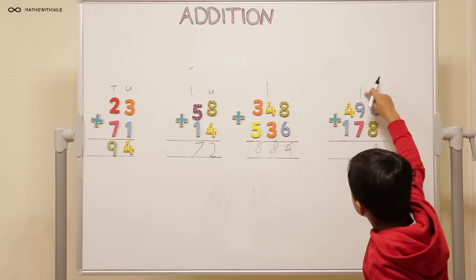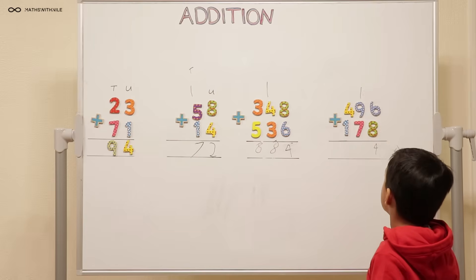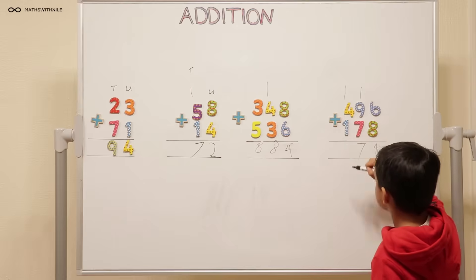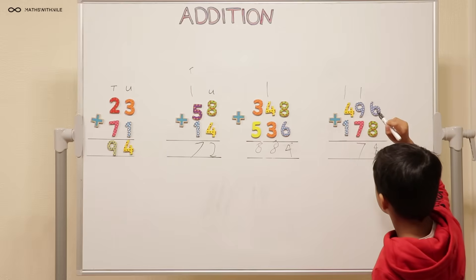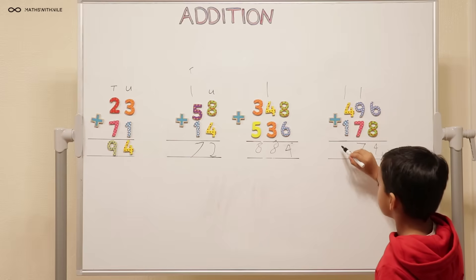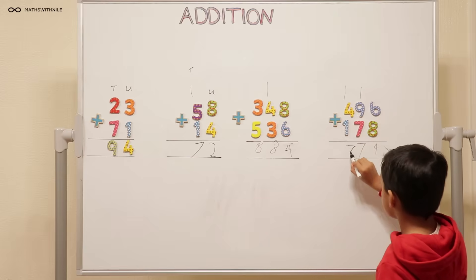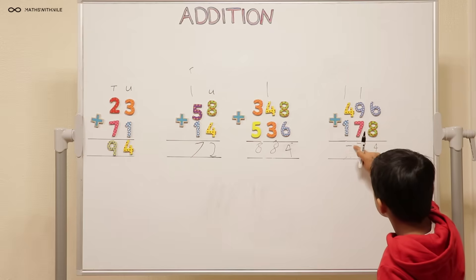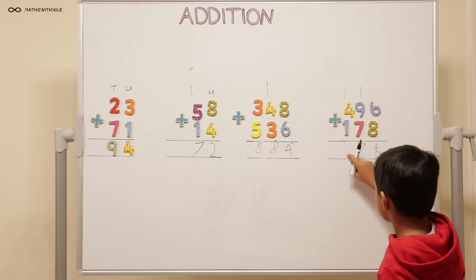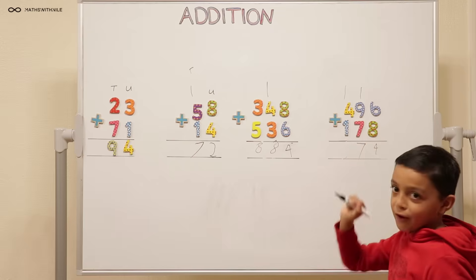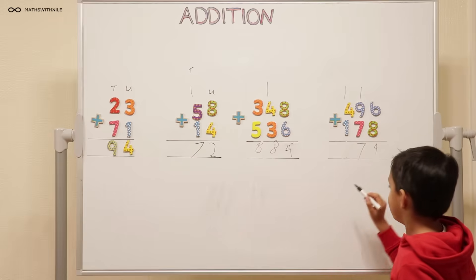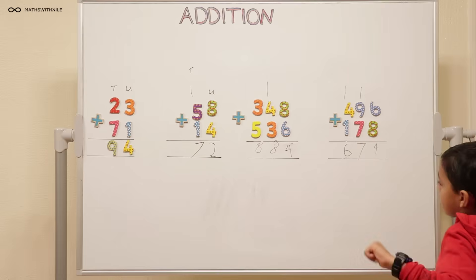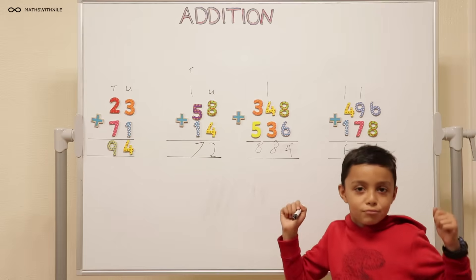So what are you going to do with that seventeen? I'm going to add another one here. And where does the seven go? You write the seven. And then one plus five equals six. Six hundred and seventy-four. Six hundred and seventy-four. Very good.